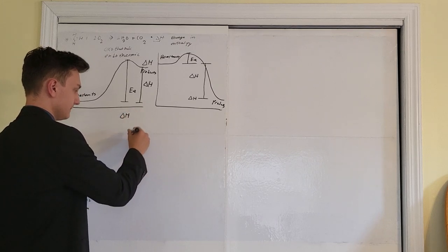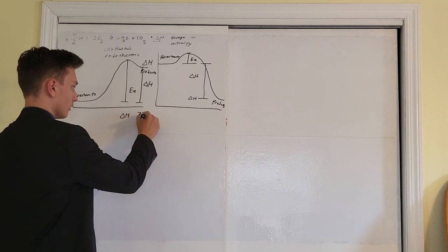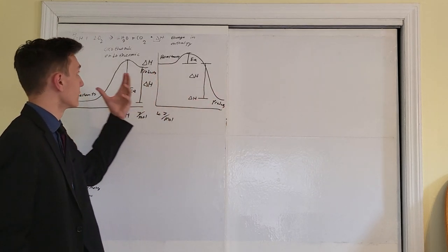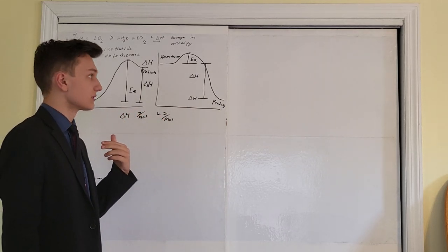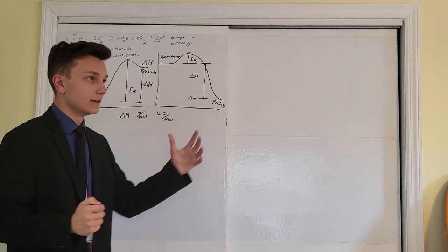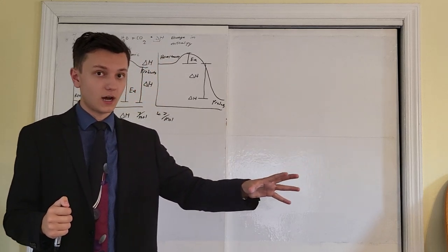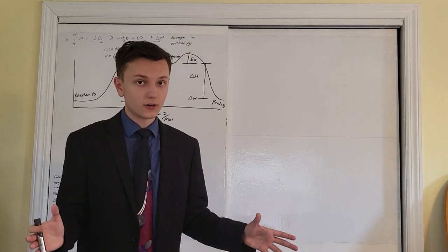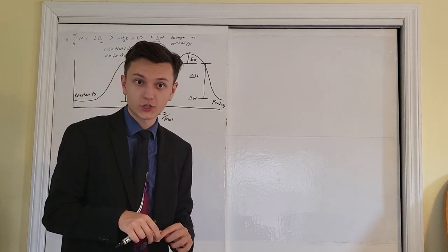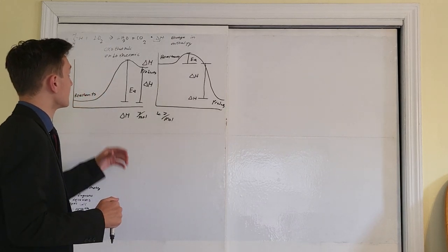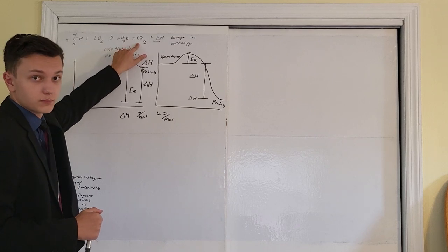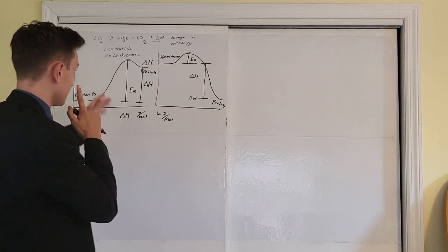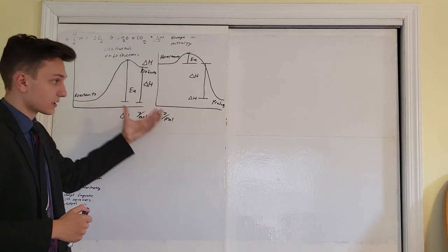Delta H, the change in energy, is in units of joules per mole, or more commonly kilojoules per mole. For every mole of reactant that reacts, how many kilojoules of energy is released or absorbed? If the environment is getting hotter, that means the reaction is losing heat — the heat is coming from the reaction, so there's less potential energy in the products than in the reactants.